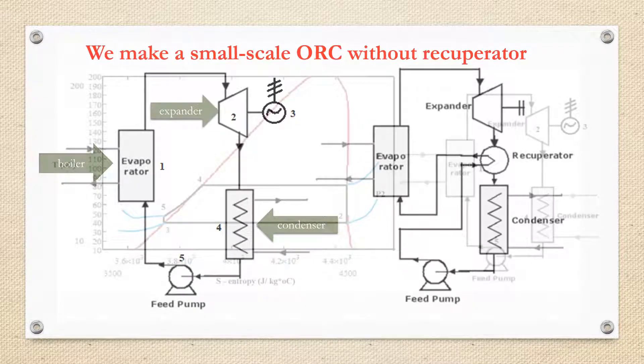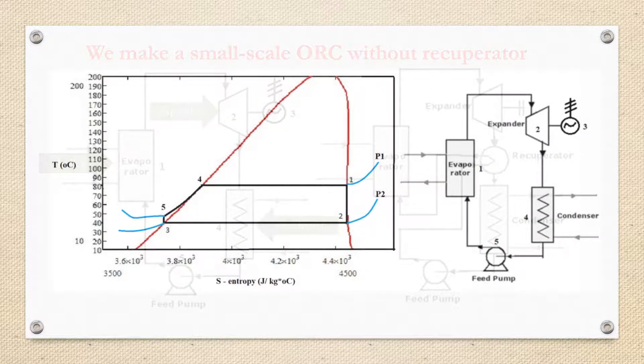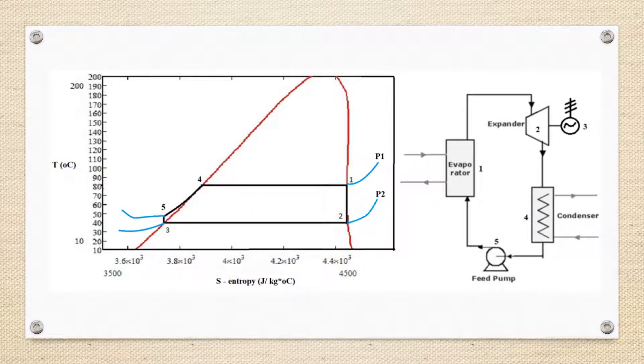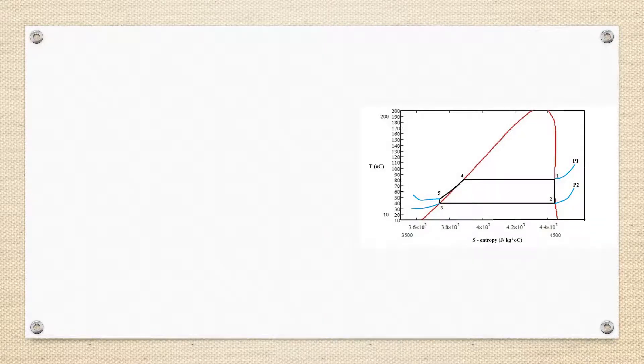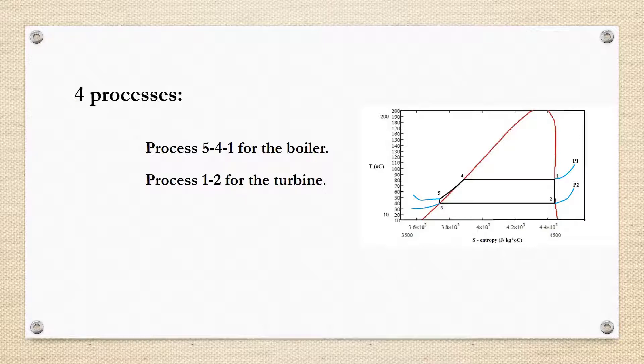The organic working fluid is successively pumped, vaporized, expanded and condensed. To make a Rankine cycle we need four processes. This picture shows the thermodynamic T-S diagram: Process 5-4-1 for the boiler, process 1-2 for the turbine, process 2-3 for the condenser, and finally process 3-5 for the pump.